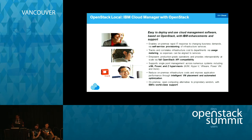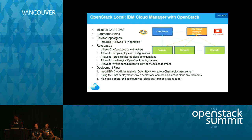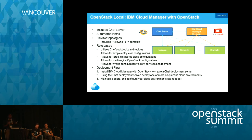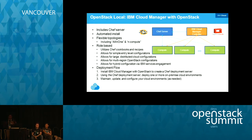What's included in the IBM Cloud Manager software package: it comes with a Chef server used to automate installation, and it allows a lot of flexibility in terms of topologies. The way it works is you install your Chef deployment server, and from there it takes over — supporting configurations from very simple ones to large multi-region configurations.